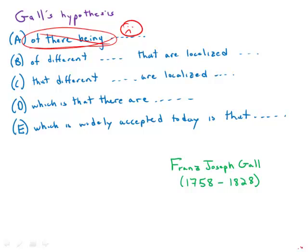Answer choice B, of different mental functions that are localized in, a very indirect way of phrasing it, very wordy and indirect. So we're not happy with that either.